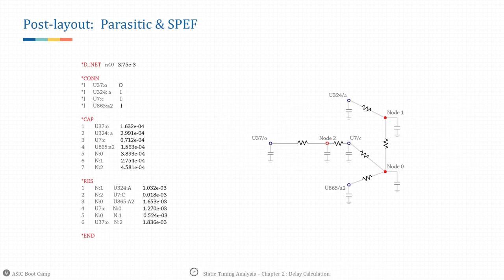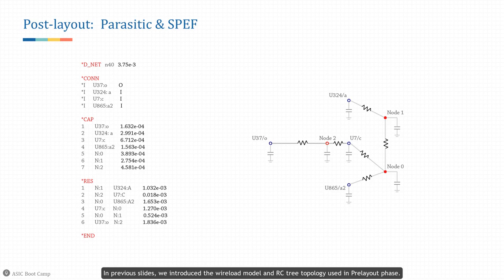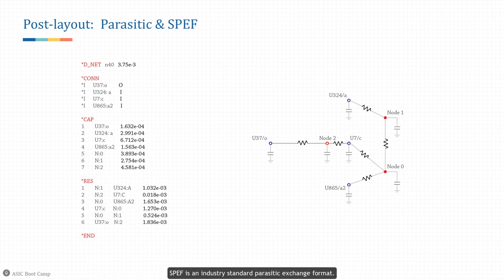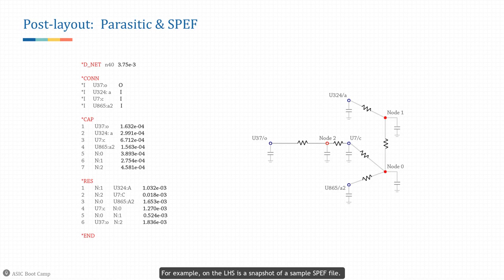Parasitic and SPEF: in the previous slides we introduced the wire load model and RC tree topology used in the pre-layout phase. After the design enters the post-layout phase, where the actual route is done, we usually use a layout extraction tool to generate more accurate design parasitic values in the format of SPEF. SPEF is an industry-standard parasitic exchange format. SPEF contains distributed RLC interconnect values and corresponding coordinates for nodes. On the left-hand side is a snapshot of a sample SPEF file; it describes a net topology along with RC values between all nodes.